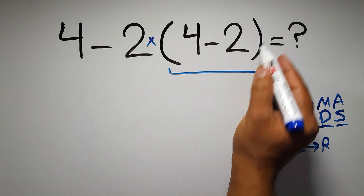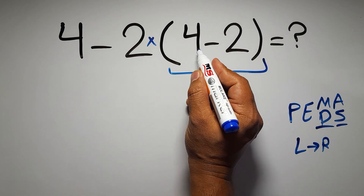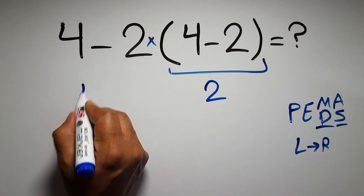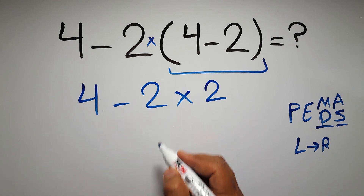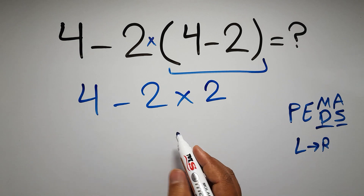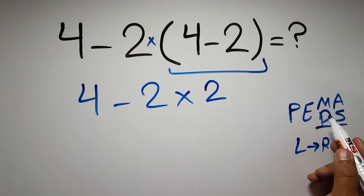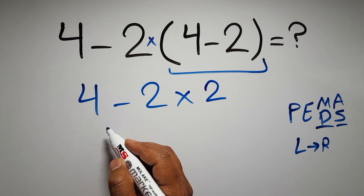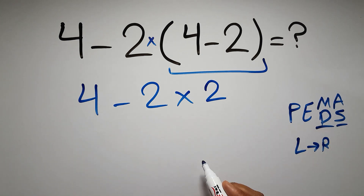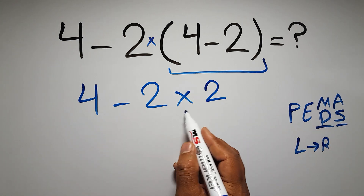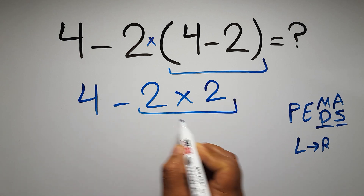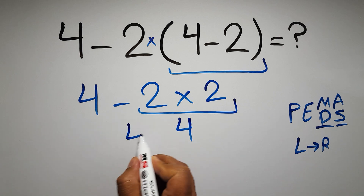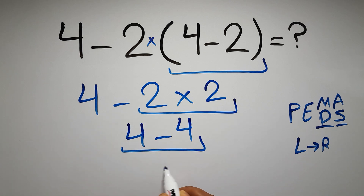So first we have to do this parentheses. Inside this parentheses we have four minus two which gives us two. So now we have four minus two times two — one subtraction and one multiplication. According to PEMDAS, multiplication has higher priority than subtraction, so first we do this multiplication: two times two is four. Then four minus four which equals zero, and this is our final answer — zero.